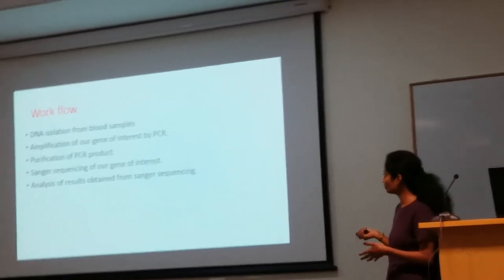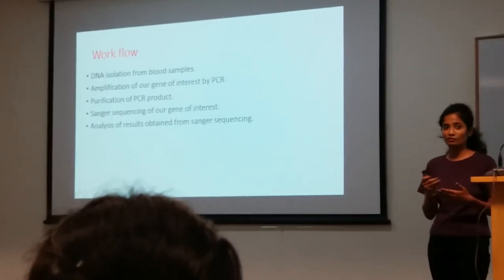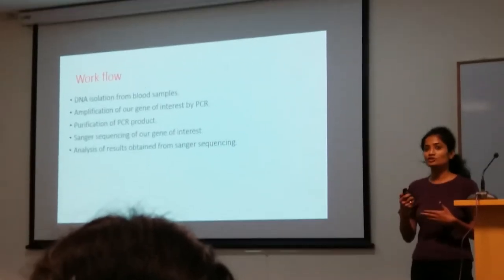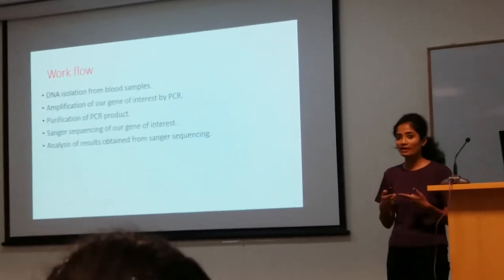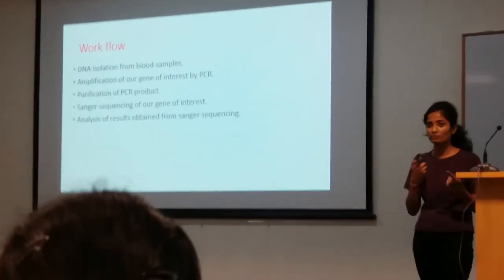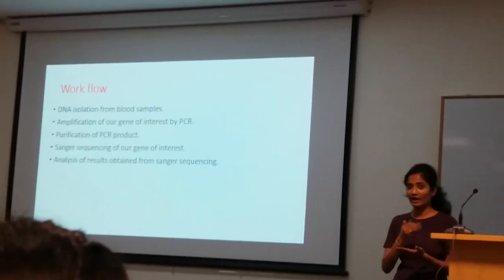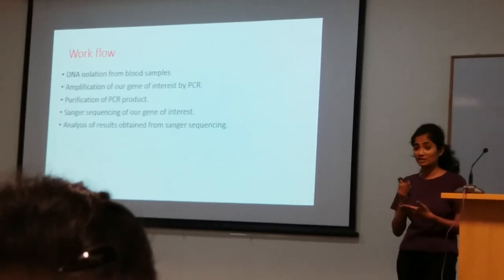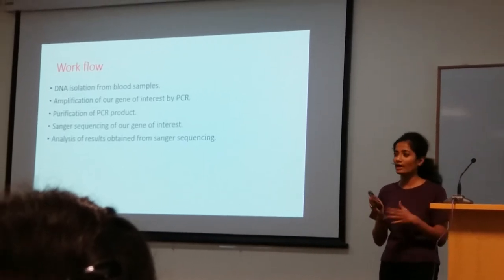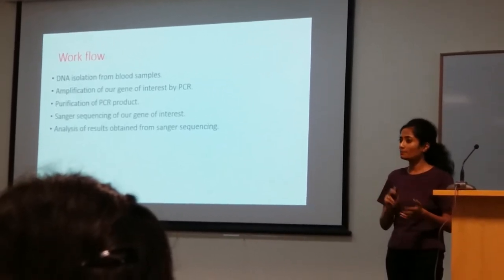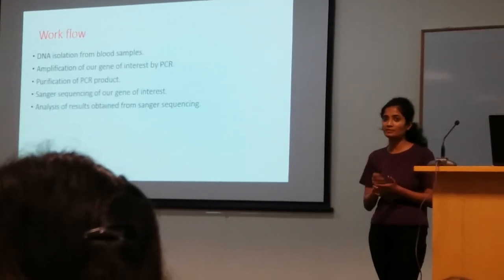The workflow we follow begins with DNA extraction from blood samples. For both diseases, we use blood samples for analysis. We isolate the DNA and amplify the gene of interest. For diabetic retinopathy, we target the VEGF gene, and for MPS we have a set of genes — different genes are affected for each MPS type. For diabetic retinopathy, the region of interest is the promoter and 5' UTR region, while for MPS the intron and exon regions are the main focus.